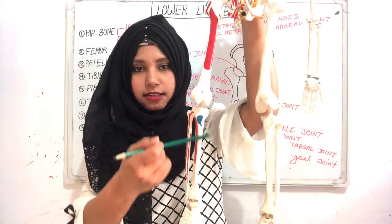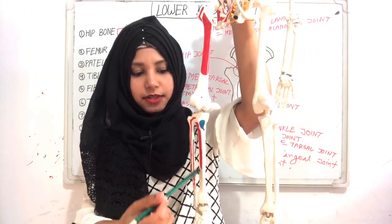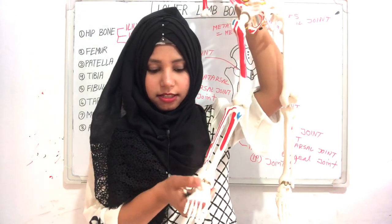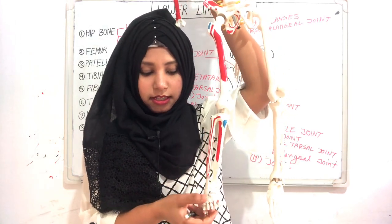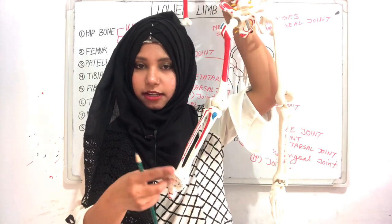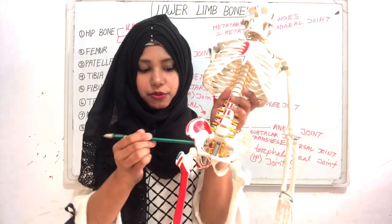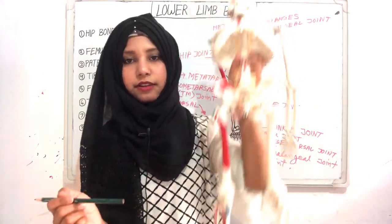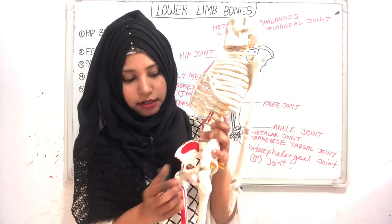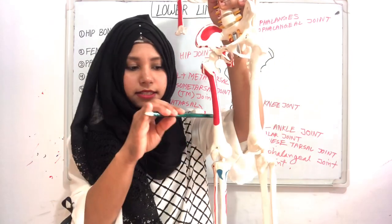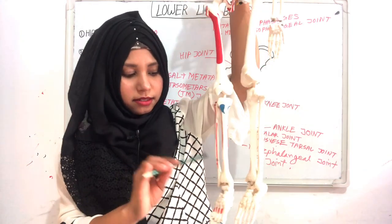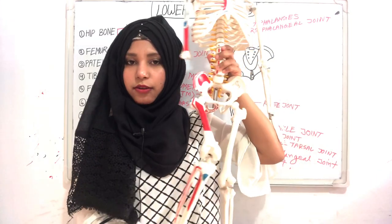This is our tibia — the thick one — and this is the thin one, the fibula. These are the tarsal bones, and these five are the metatarsals, then the phalanges. This is our hip joint, this is the knee joint, and this is the ankle joint. This is the medial condyle and this is the lateral condyle. This is the medial malleolus and this is the lateral malleolus. So this is our lower limb.